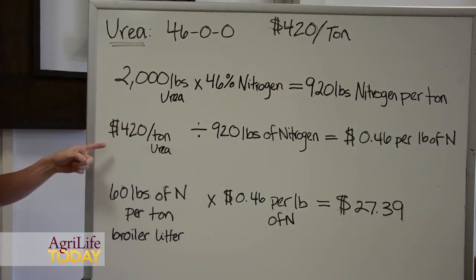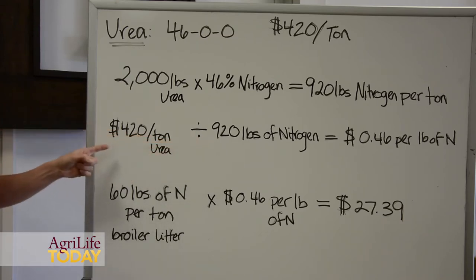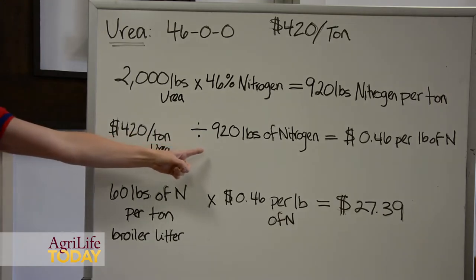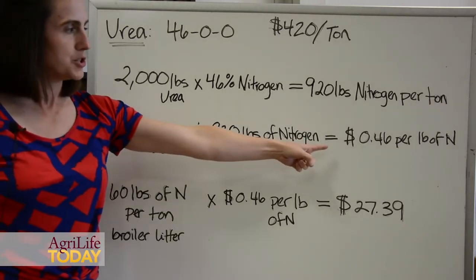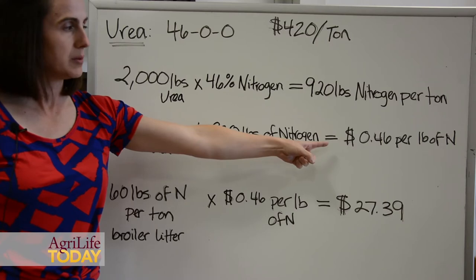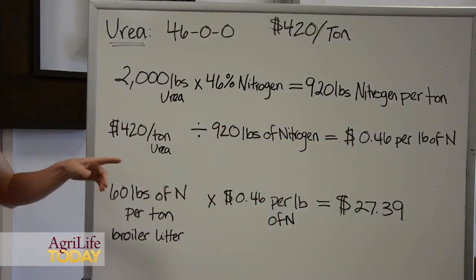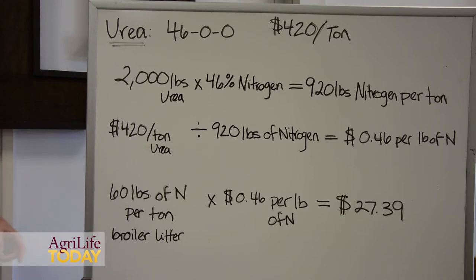If urea is $420 per ton and we have 920 pounds of nitrogen, we divide that price by the pounds of nitrogen within that ton. We end up with the value of that nitrogen on a per-pound basis: 46 cents. So each pound of nitrogen within that urea is worth $0.46, based on the price of $420 per ton of urea.